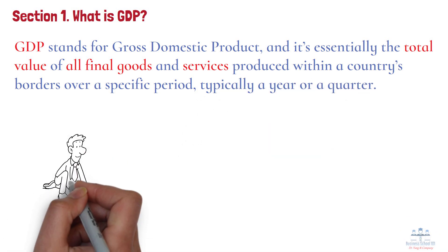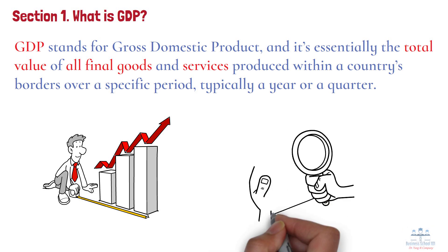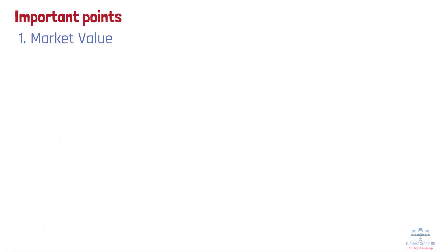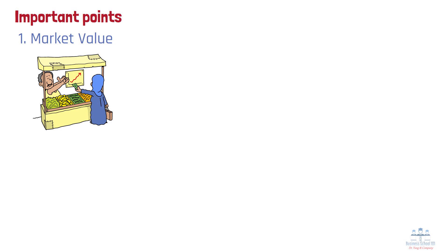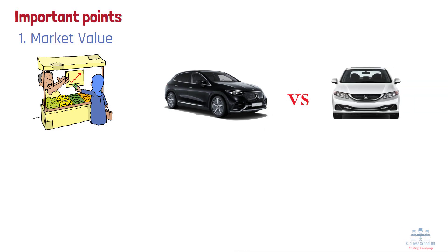Think of GDP as the ultimate measure of economic activity — it's like a giant scoreboard that tells us how much value an economy is generating. Here are a few important points about GDP. Number 1: Market value. GDP measures the market value of goods, meaning it's about the monetary value, not the quantity. So for example, a luxury car counts more toward GDP than a basic car because it has a higher price.